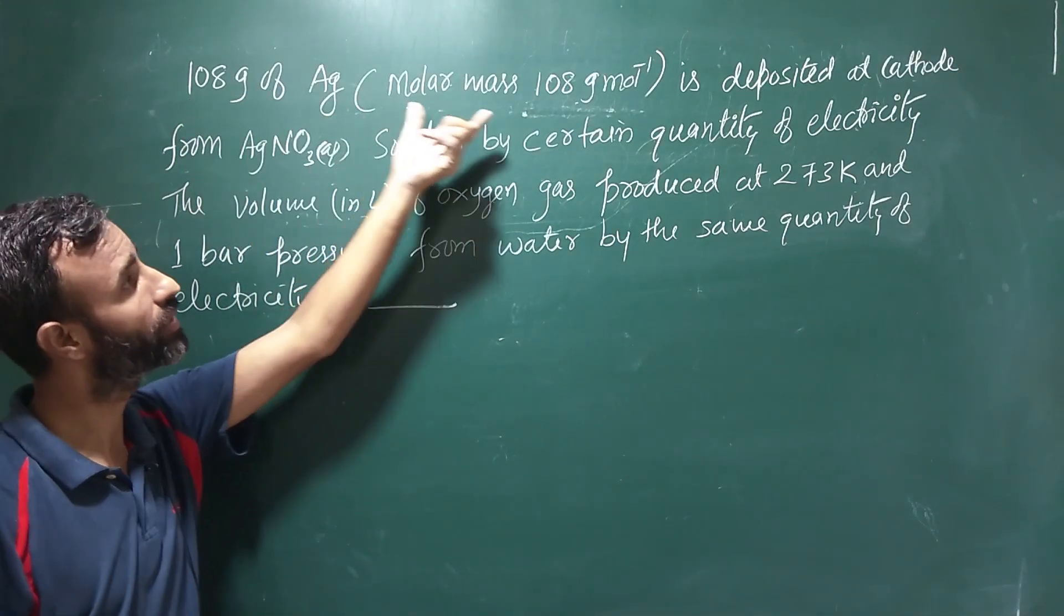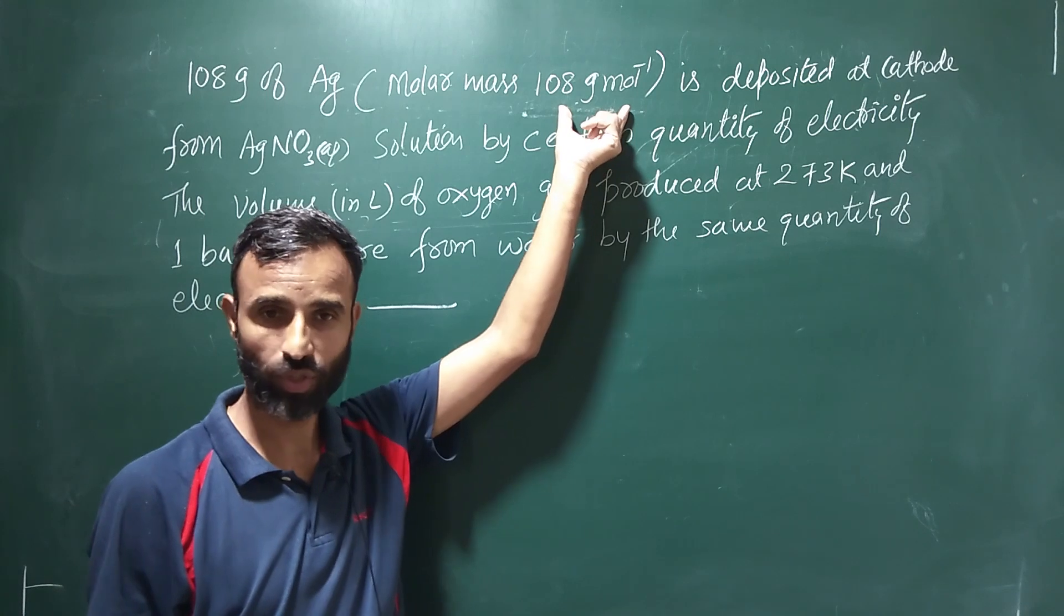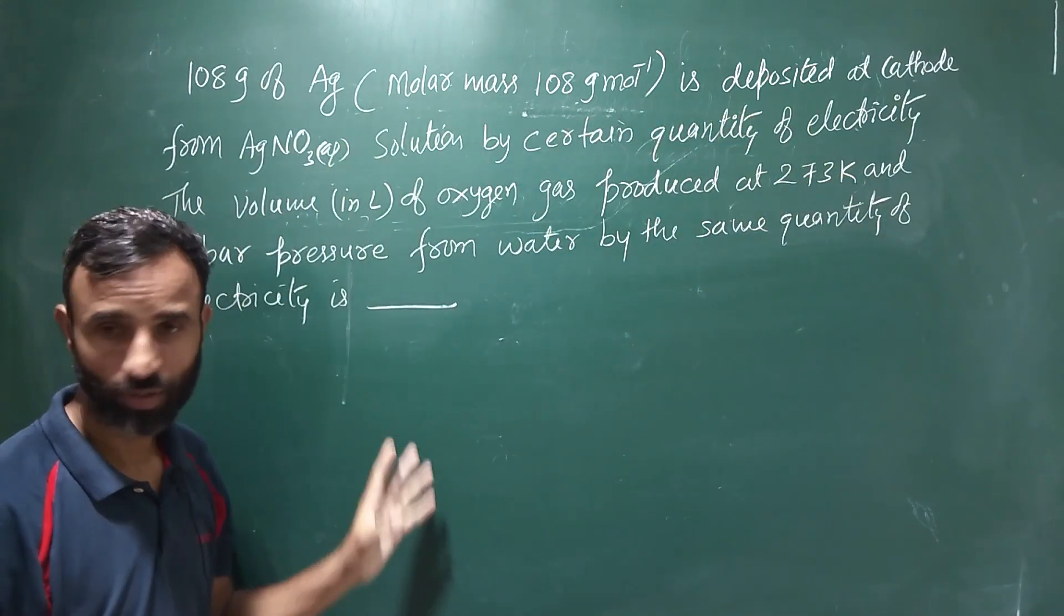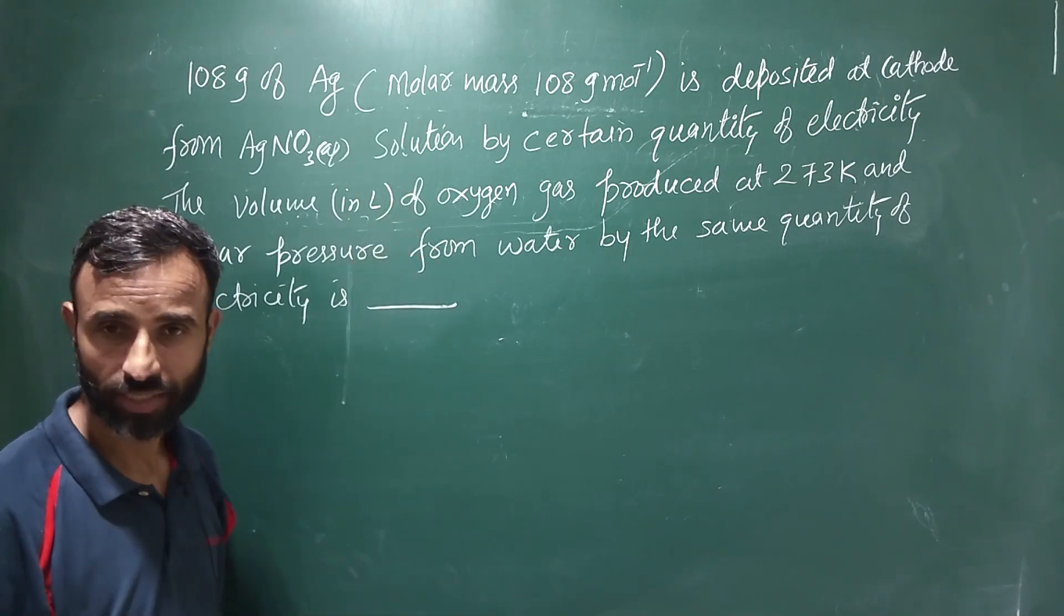108 gram of silver, 108 gram per mole, is deposited at a cathode from silver nitrate solution.